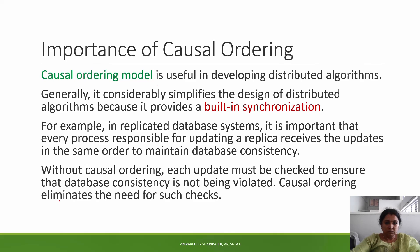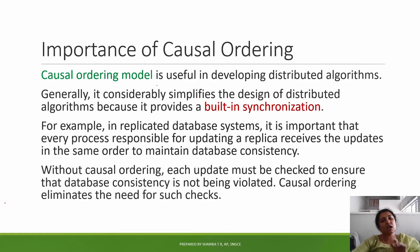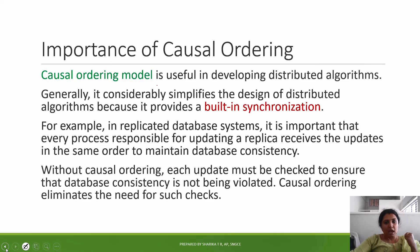One example where causal order matters is a replicated database system. That means we have multiple copies of the database. If you update one server, we upload a single copy and it replicates. We need to save one server; after we have the data, we don't need to go back to the server.